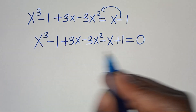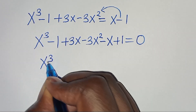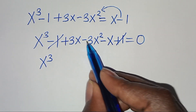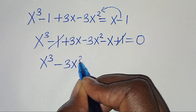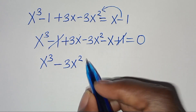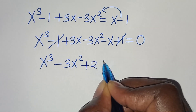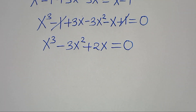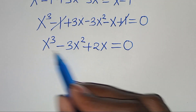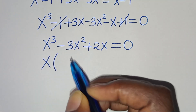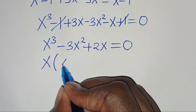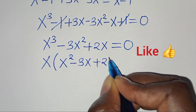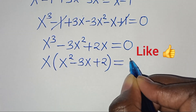Now, this implies that from here, we have x to the power of 3, minus 1 plus 1 — this simplifies. Then we have minus 3x to the power of 2, we have 3x minus x, this is plus 2x, this is equal to 0. Now, we have x to the power of 2, minus 3x plus 2, in parenthesis, this is equal to 0.